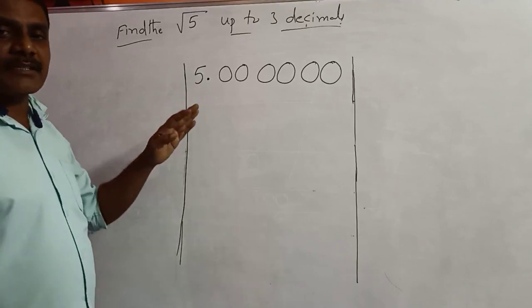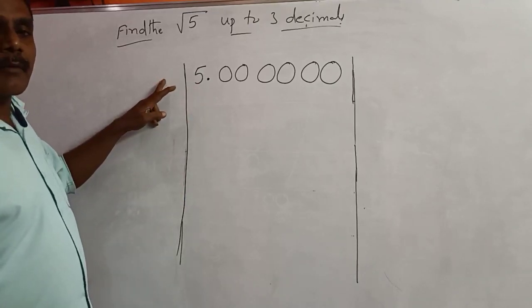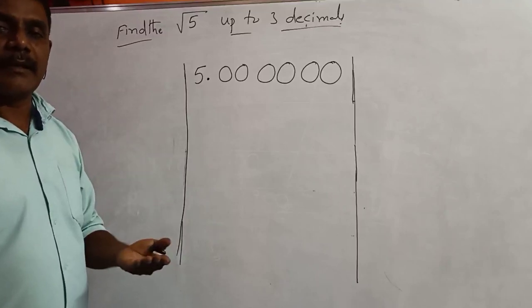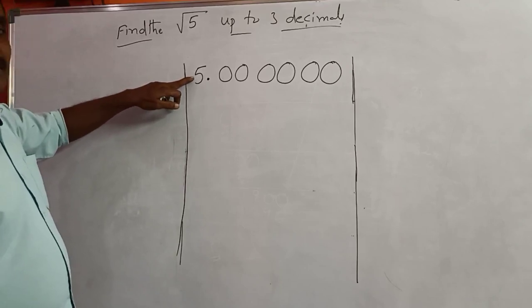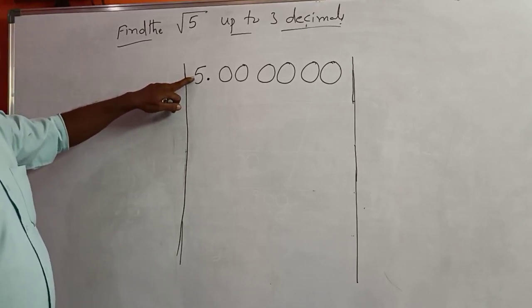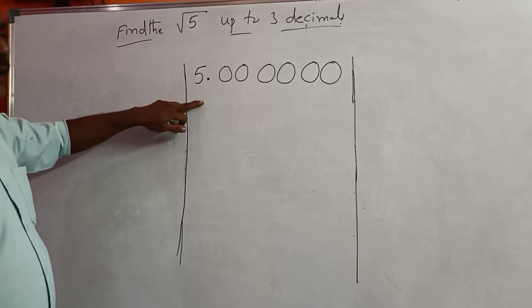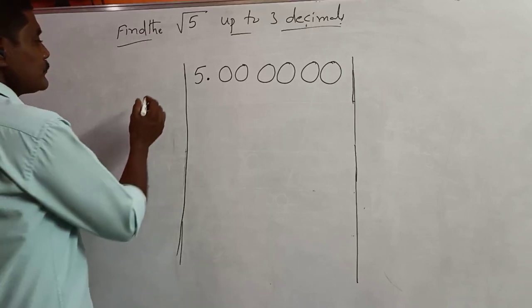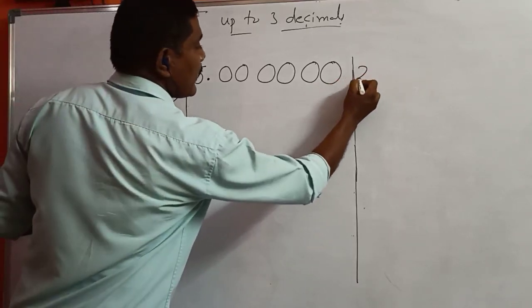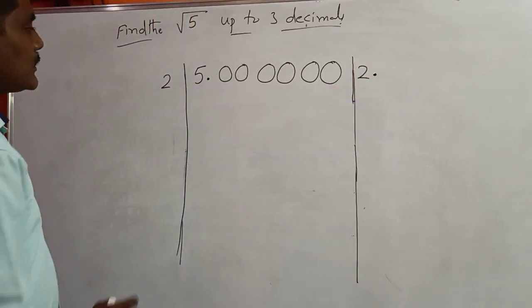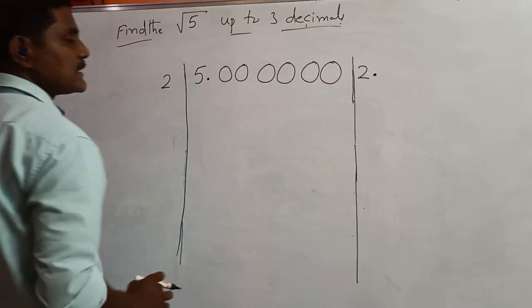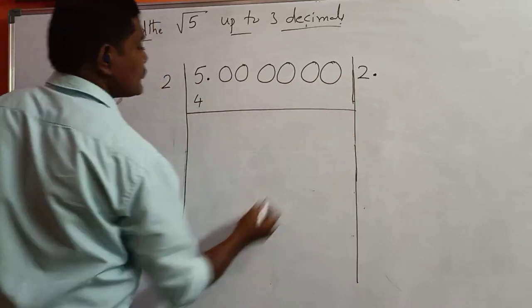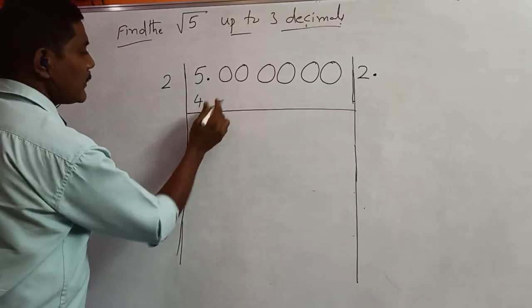Students, the first question is: by which number do we multiply the same number up to 5? If you take 2: 2×2=4, which fits. If you take 3: 3×3=9, which is greater than 5, so not possible. So we take 2. Write the same number on the right and put the decimal here. 2×2=4. Then 5 minus 4 equals 1. Write down 2 zeros giving 100.